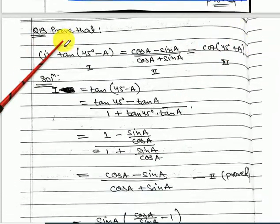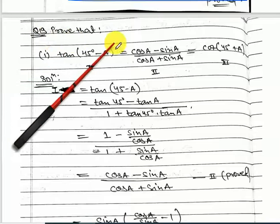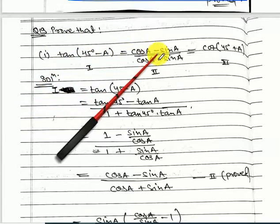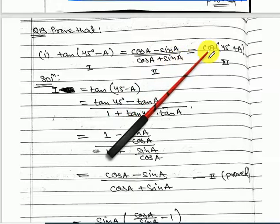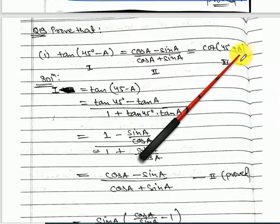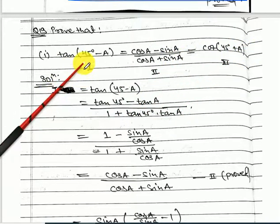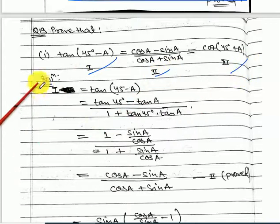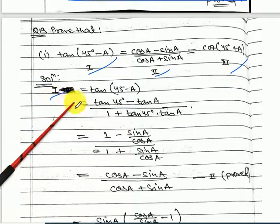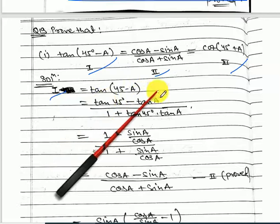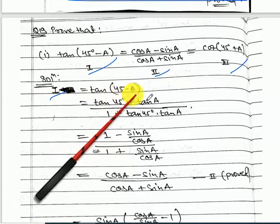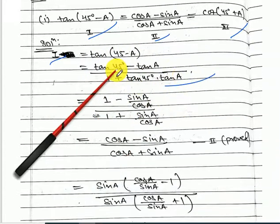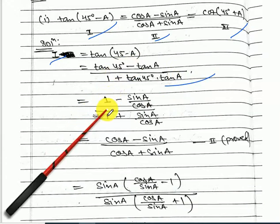Question number 19: prove that tan(45 minus A) equals (cos A minus sin A) upon (cos A plus sin A) equals cot(45 plus A). Label these as parts 1, 2, and 3. For part 1: use the formula for tan(A minus B). You know tan 45 equals 1, so substitute.